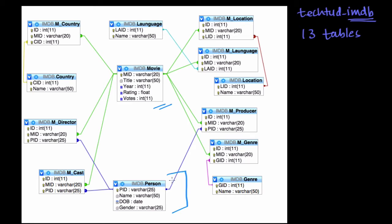Whenever required we will be referring to the person table. We have M_director, which is a relation table establishing a relationship between movie and director. Similarly we have M_cast, also a relation table establishing a relationship between movie and cast — and cast is again a person. We also have M_producer, a relation table establishing the relationship between movie and producer.